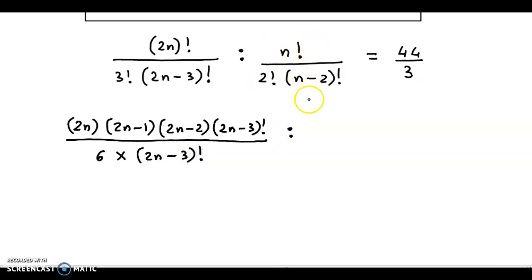Now in the second part, we could convert n! into (n-2)!. So we split this as n(n-1)(n-2)! divided by, now 2! value is 2 times (n-2)! equals 44 upon 3.